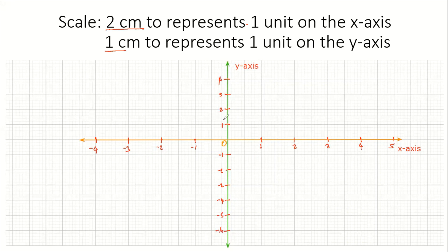So this is how you would draw your Cartesian coordinate system using two different scales on the axes. On the x-axis it's two centimeters to represent one unit, and on the y-axis it is one centimeter to represent one unit. As you can see, the distance between the strokes are different — the distance between the strokes on the x-axis is two times the distance between the strokes on the y-axis. Thank you for watching and do enjoy the rest of your day.